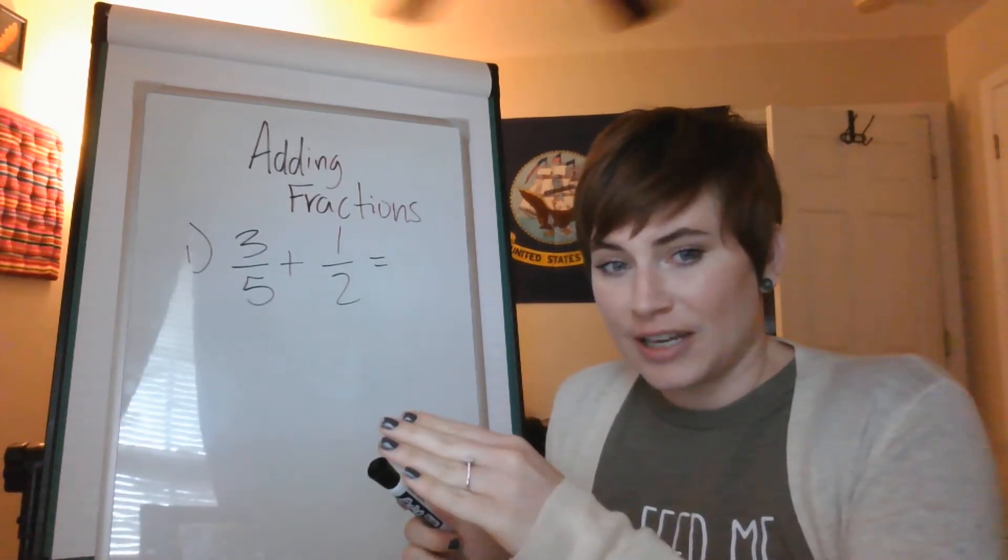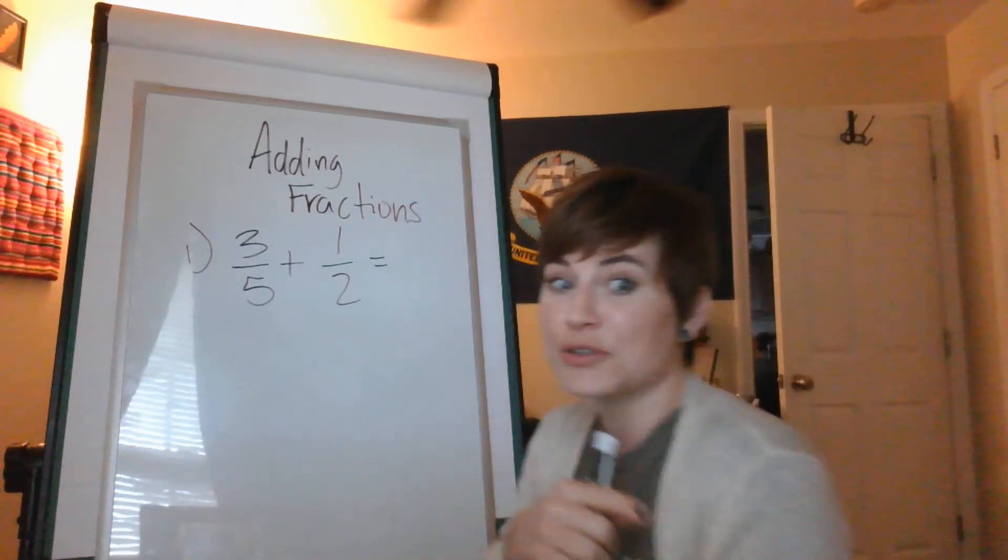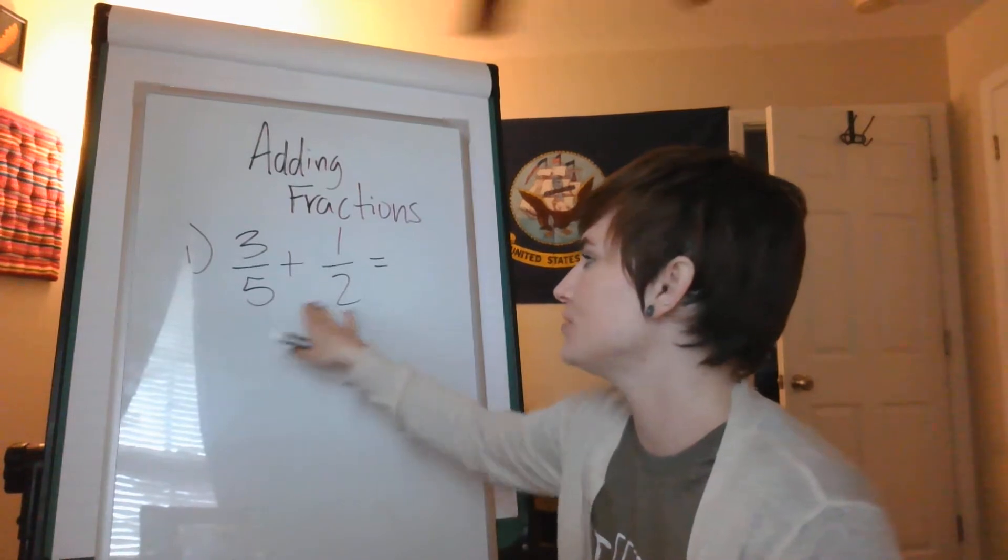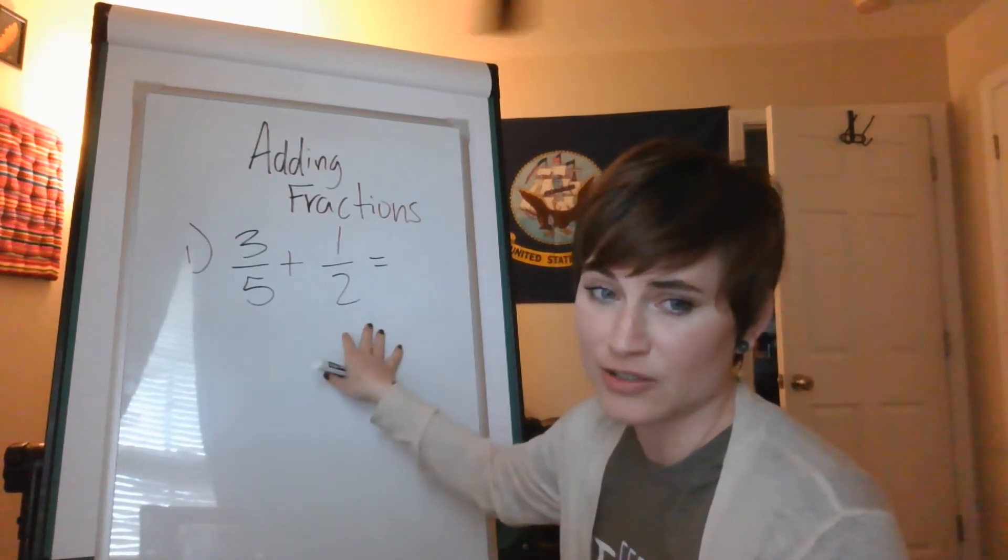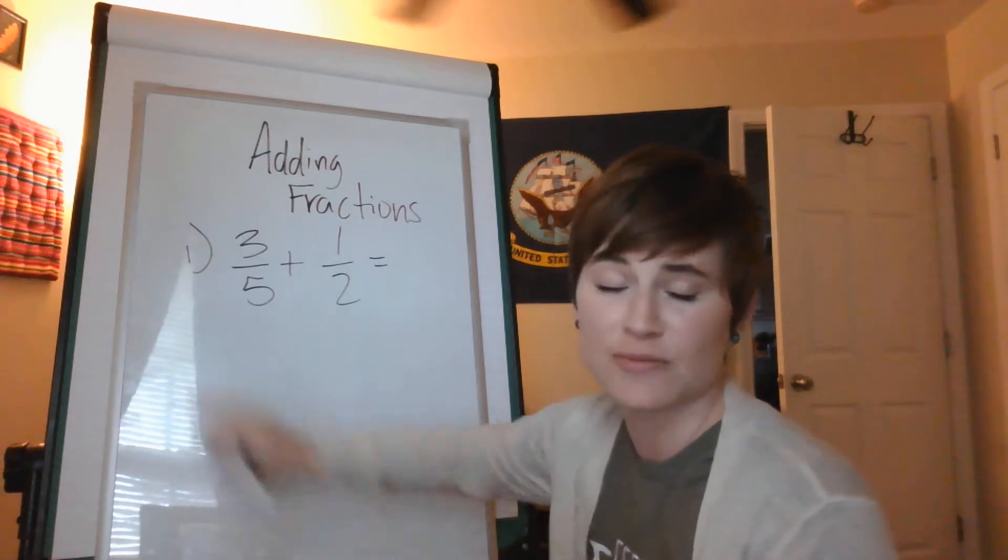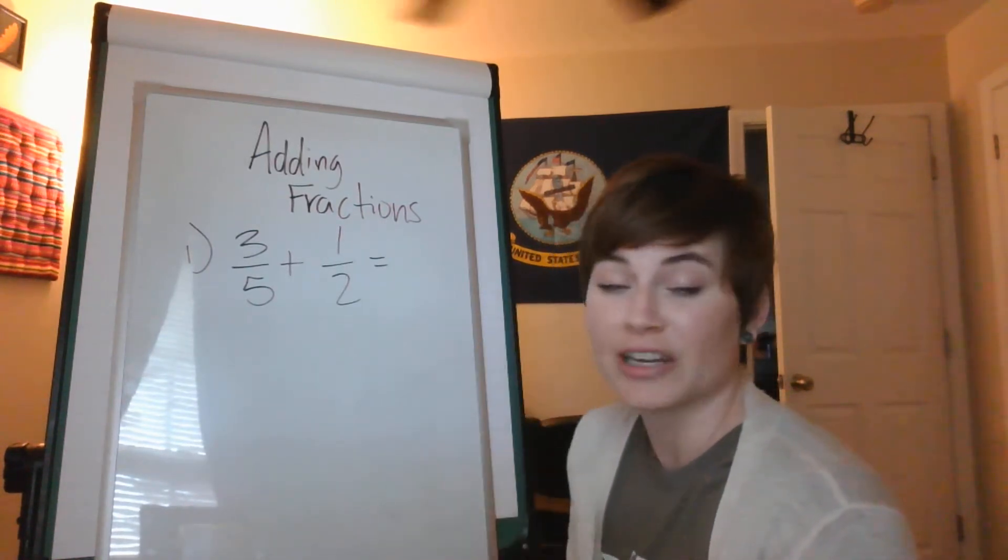So let's go ahead and look at this, work it out together. You should be doing this while I do it. Alright, so we have two different denominators and we have to have similar denominators in order to add. Just like we have to have similar denominators to subtract, we have to have similar denominators to add.